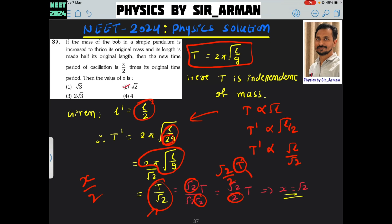So this is the original. So the original becomes root 2 by 2 times, or the new time period becomes root 2 by 2 times of the original, ok. So here if you compare this with the general expression which is given here, then x is equals to root 2.